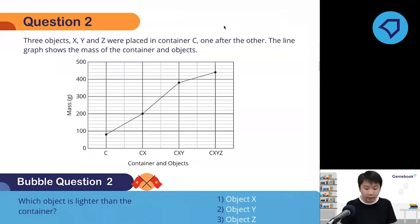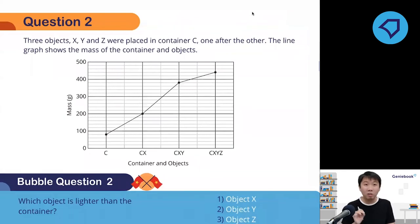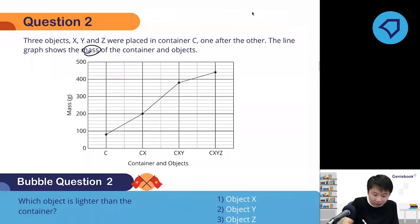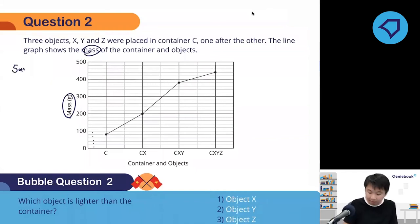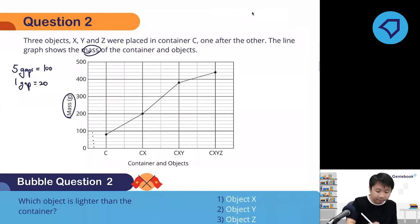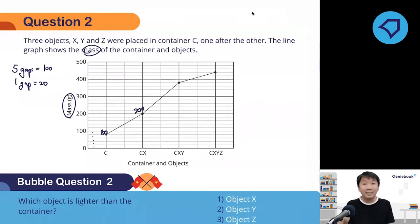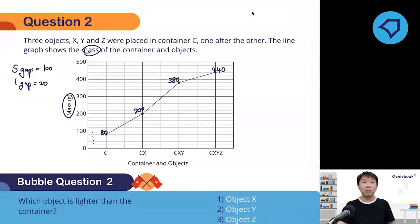Second question: three objects X, Y, Z were placed in container C one after another. The line graph shows the mass of the container and the objects. I am going to fill in the values on the graph for you. Five gaps are worth 100, so one gap will be 20. Every value increases by 20. That gives me 80 for the empty container, 200 when X is added, 380 when Y is added, and 440 when Z is added.